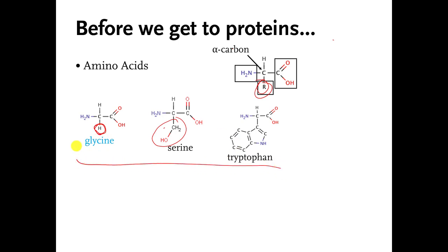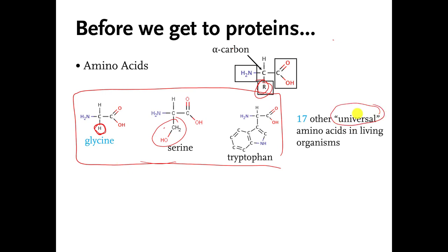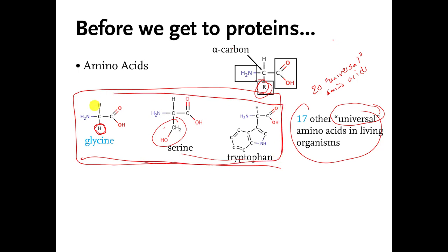So these are three different amino acid molecules, and there are many others. In fact, there are 17 more amino acid molecules that are called universal amino acids, making 20 universal amino acid molecules in total. What universal means is that as far as we can tell, every single organism that we have looked at has these 20 different amino acid molecules, and we find them in all living organisms. There are more than 20 different kinds of amino acids, but 20 of them are found in all living organisms.